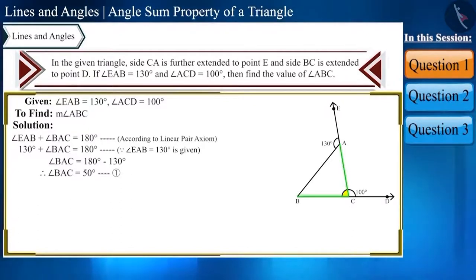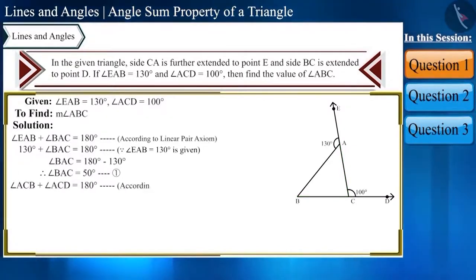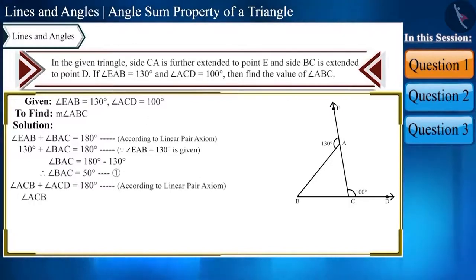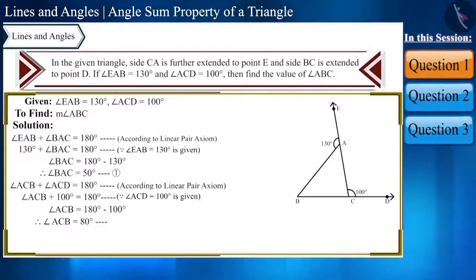Similarly, angle ACB plus angle ACD equals 180 degrees because it is a linear pair. Putting in the value of angle ACD, we get angle ACB equals 80 degrees. Let's name this equation 2.